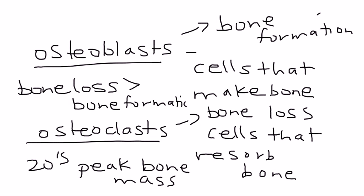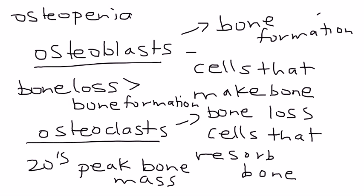When that occurs, slowly your bone density decreases. First you go through something called osteopenia, which is sort of a precursor of osteoporosis. And then you have full-blown osteoporosis later on.